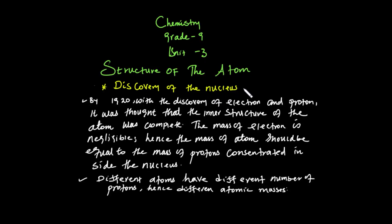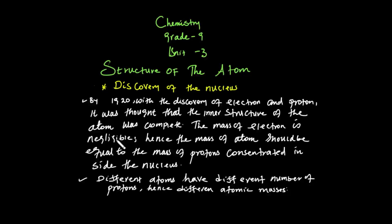By 1920, with the discovery of the electron and proton, it was thought that the inner structure of an atom was complete. The mass of an electron is negligible — almost zero. The mass of a proton is approximately equal to the mass of a neutron. Since the mass of an electron is almost negligible, the mass of an atom should be equal to the mass of the proton, concentrated inside the nucleus.